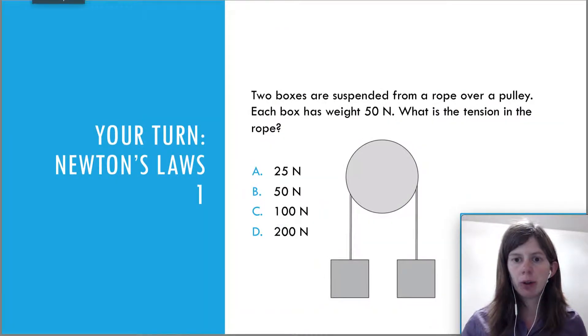So the first one is your turn. Two boxes are suspended from a rope over a pulley. Each box has weight 50 N. What is the tension in the rope? Your initial thought might be, well there are two strings, or it's actually just one string, but you might think there's a string on both sides so I'm going to add up those tensions to get 100 Newtons. But the key here is that the boxes have the same weight, so that means there's going to be as much pull on each side, so this is going to be an equilibrium.